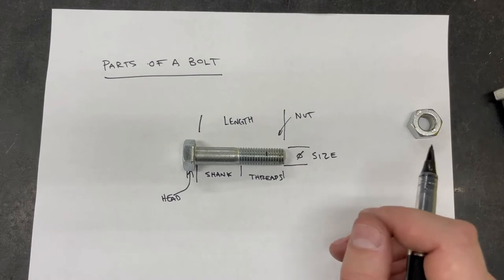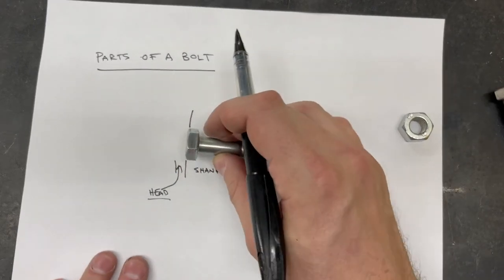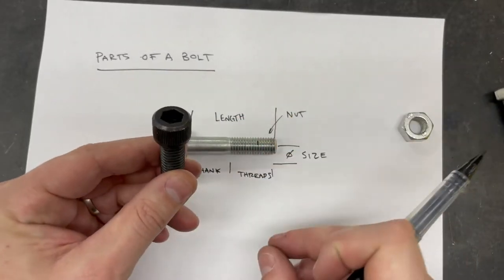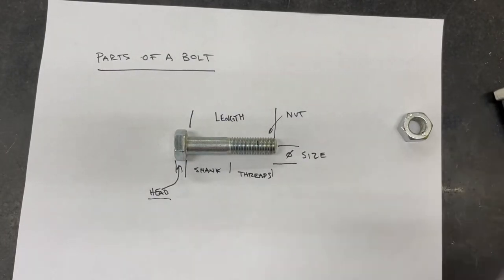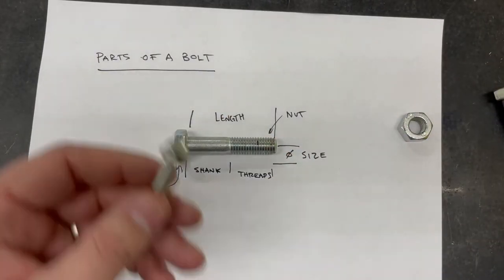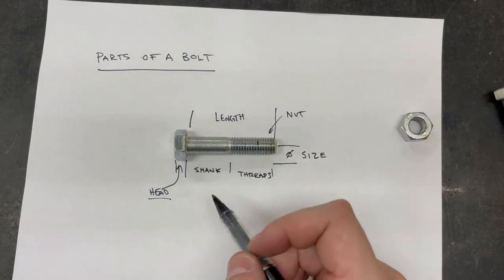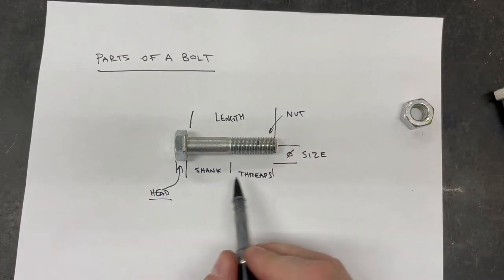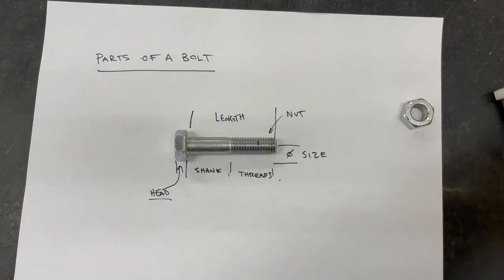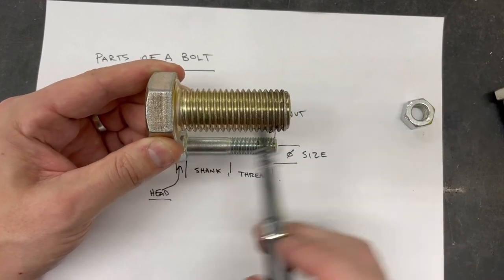To recap: we have the head of the bolt — this one is a hex head. You can also have a socket head, a pan head, a thumb screw, or a washer head with a built-in washer. The length is measured from the head to the end of the bolt. Within that length you'll have a shank and threads, though sometimes the threads take up the entire length.